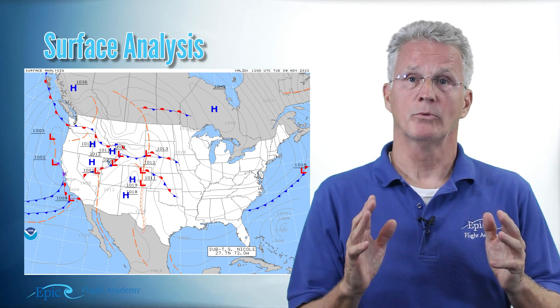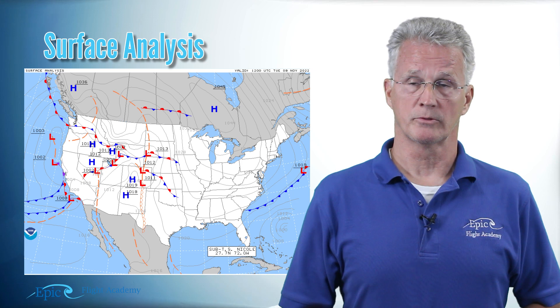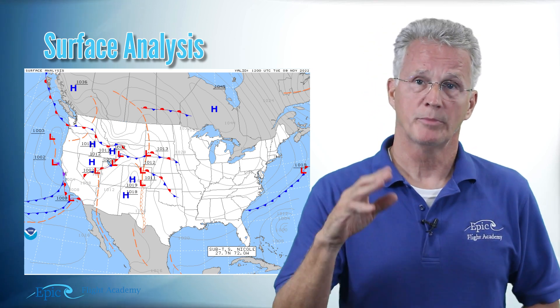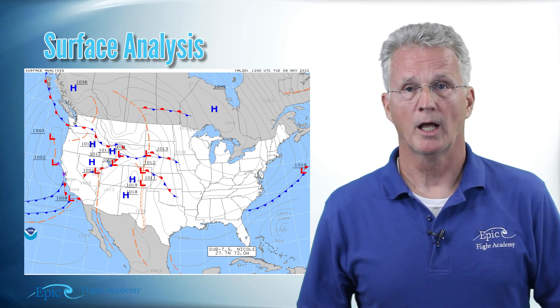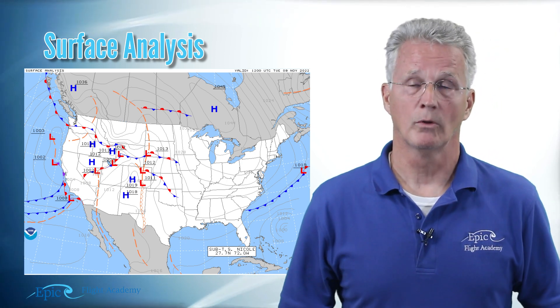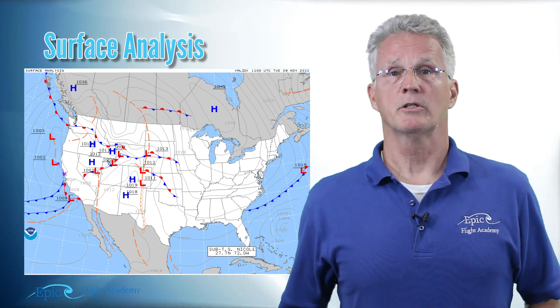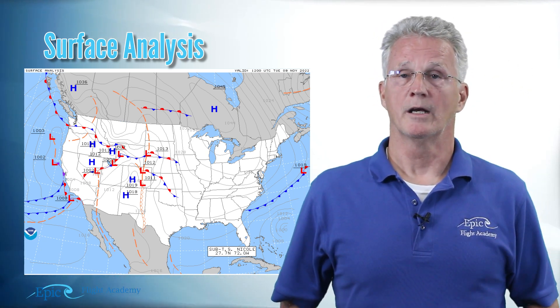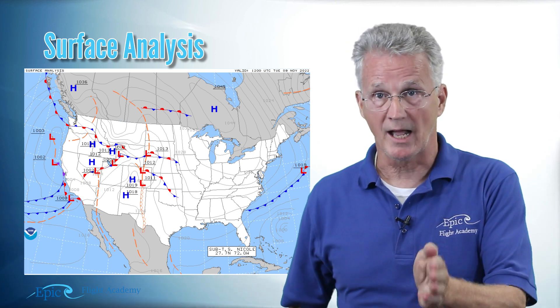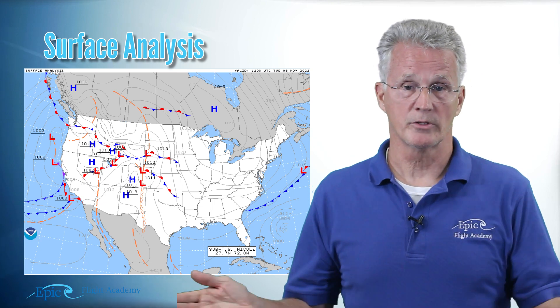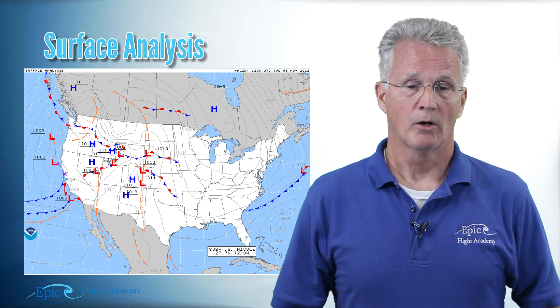We're also going to see frontal activity. Remember, a boundary layer between two air masses. If a colder air mass is overtaking a warmer air mass, it'll be depicted with a blue line and triangles as a cold front. A warm front is depicted in red. A stationary front is when an air mass simply stops moving and the boundary between those two air masses is now stationary.